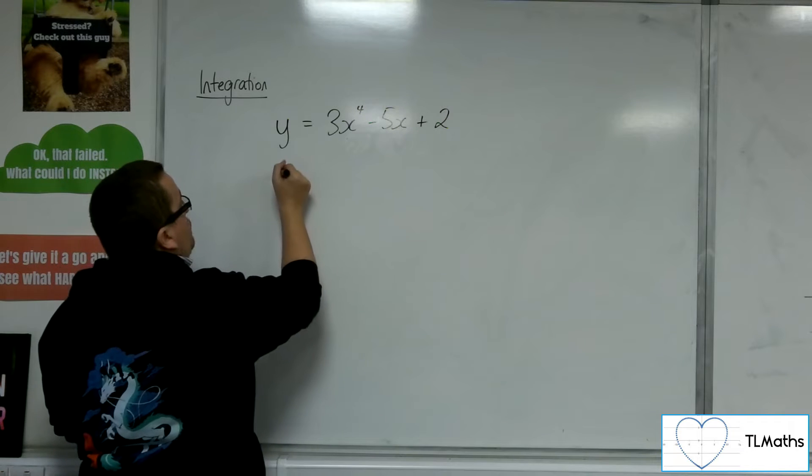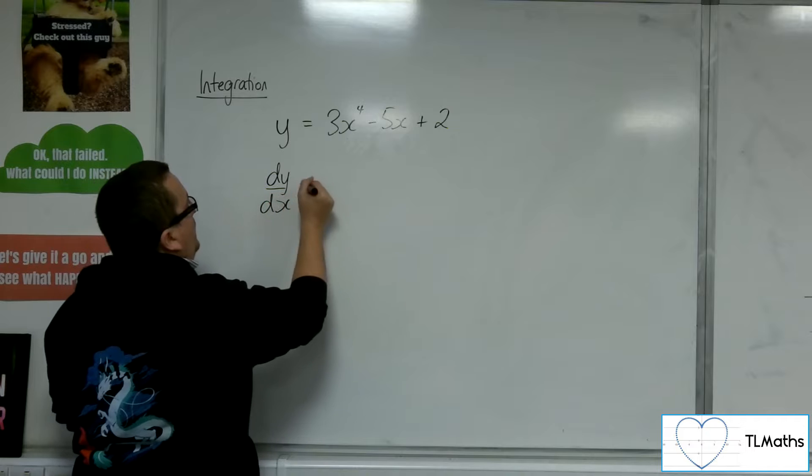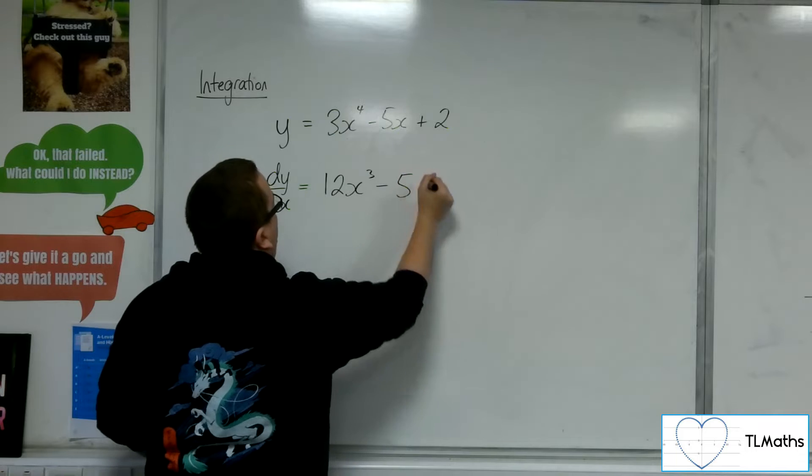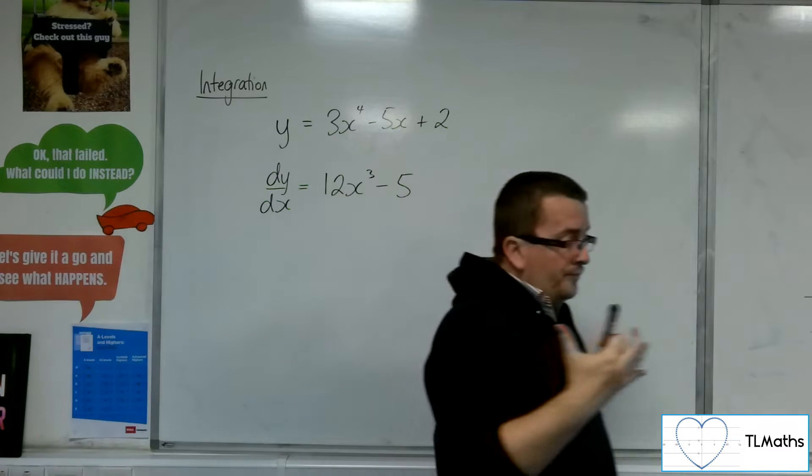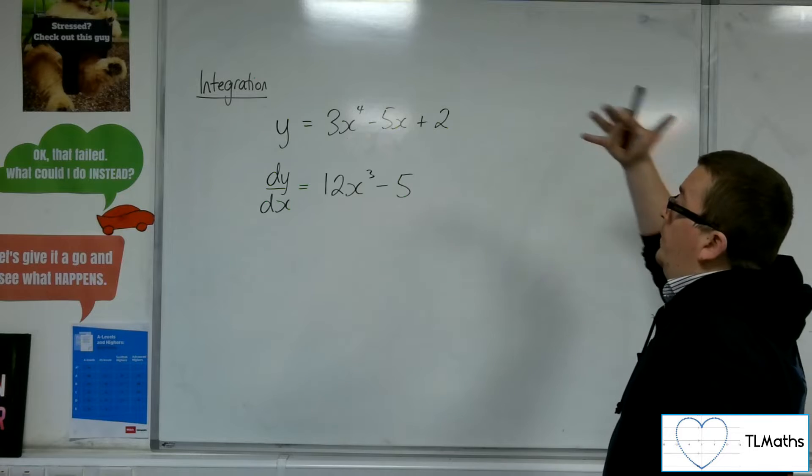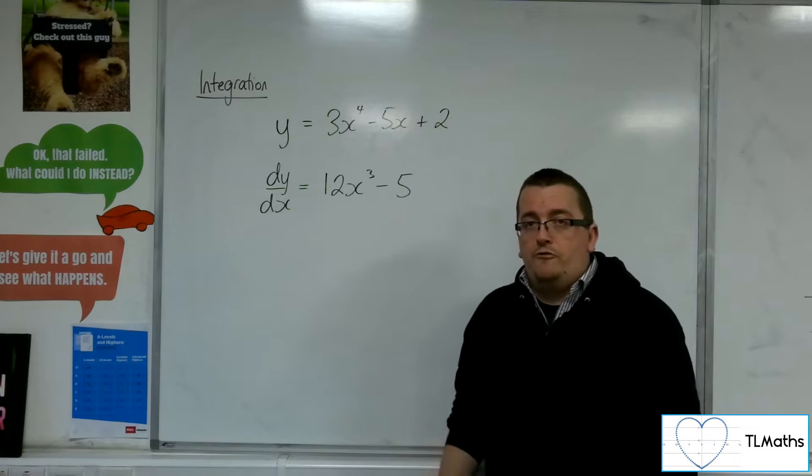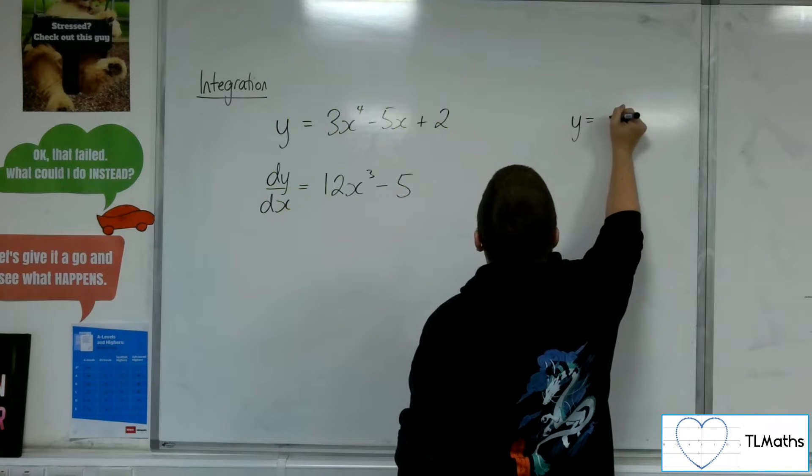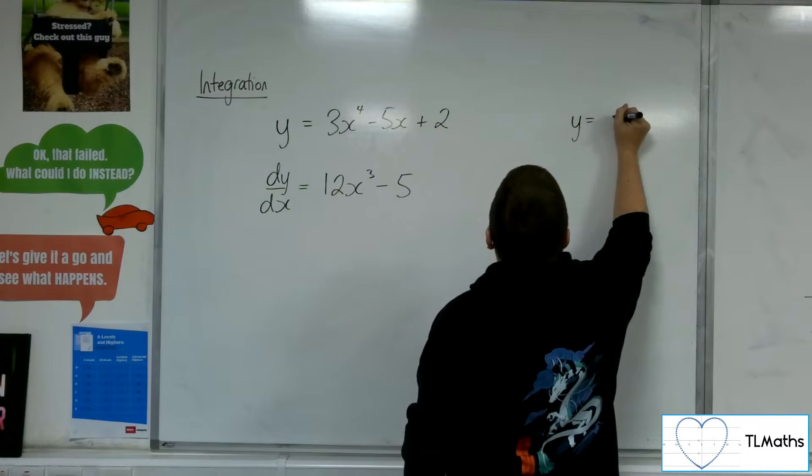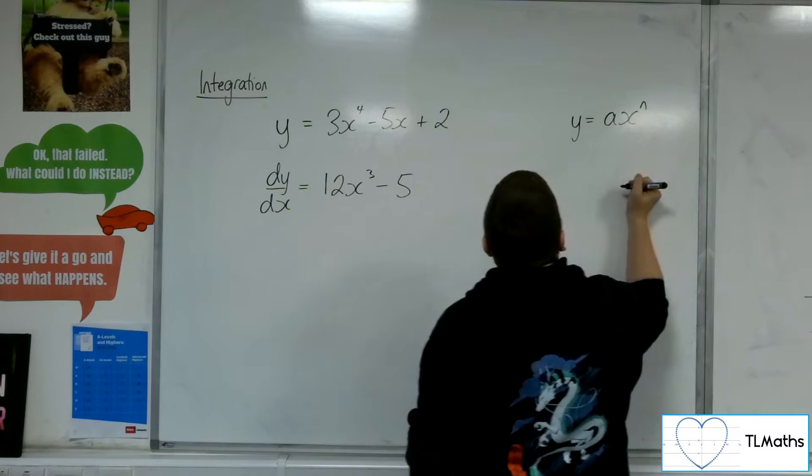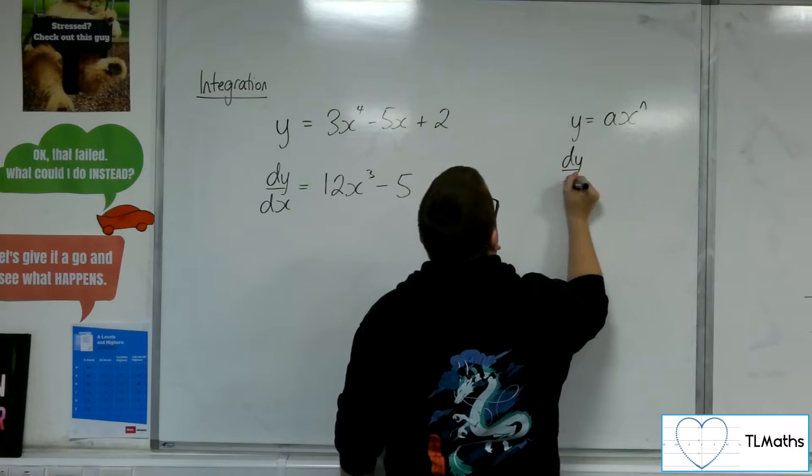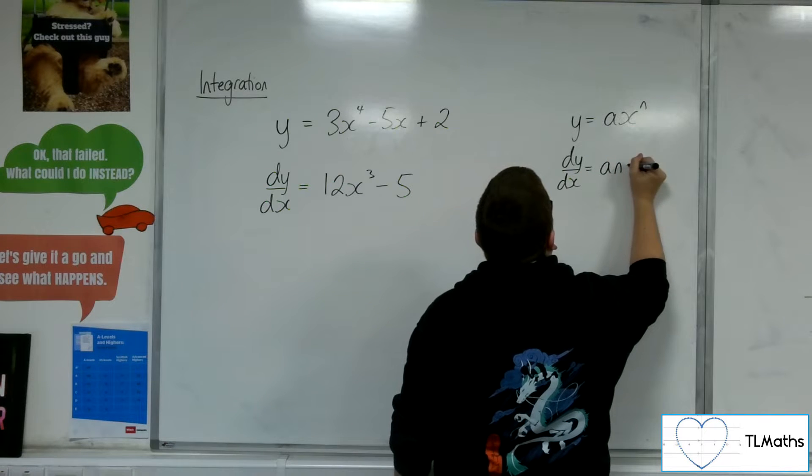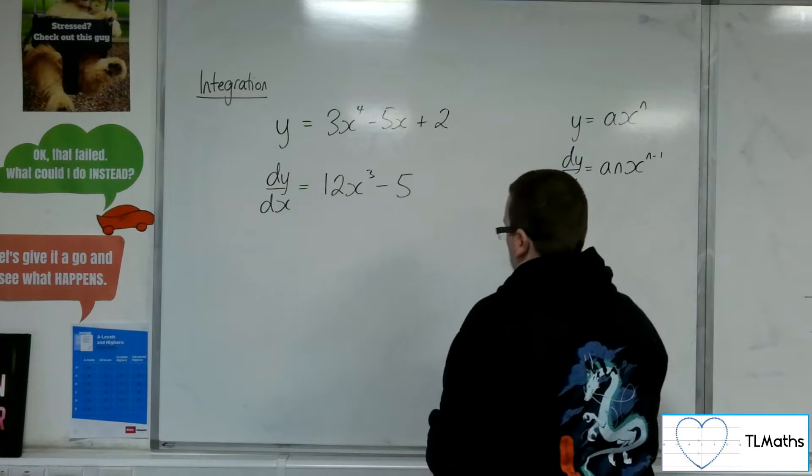then I could differentiate that to find dy by dx is equal to 12x cubed minus 5. OK, so that's the process that we've learnt going through differentiation so that if we have y equals, let's say, a times x to the n, then when I differentiate, the power comes down to the front and I take 1 from the power.